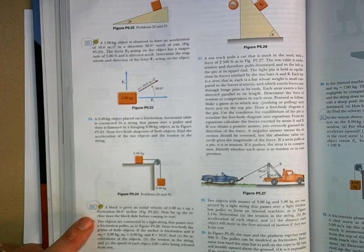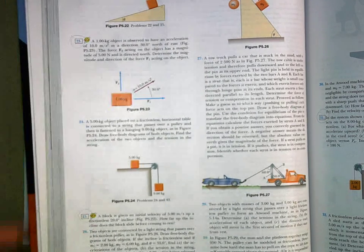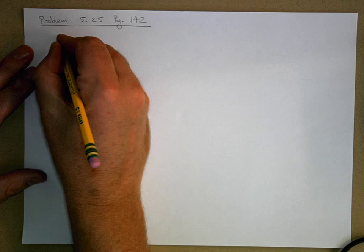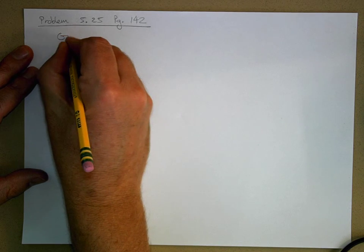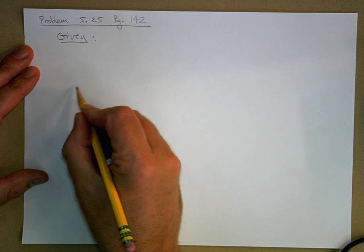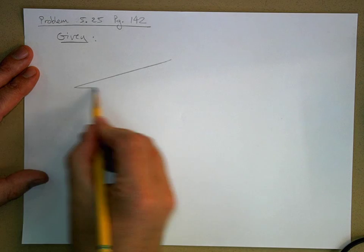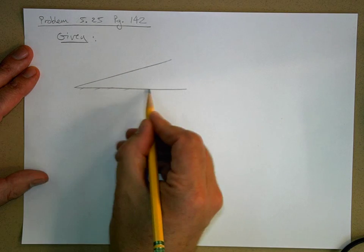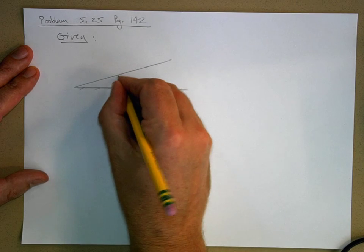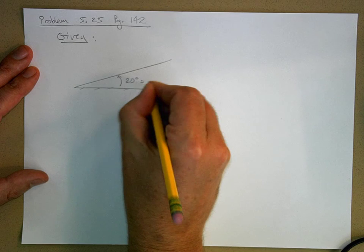How far up the incline does the block slide before coming to rest? Okay, so this is frictionless, right? This is before we started doing friction. So let's do given. So we have a 20 degree incline, so here's the horizontal, this is our incline, it's 20 degrees equals theta, our angle of incline.